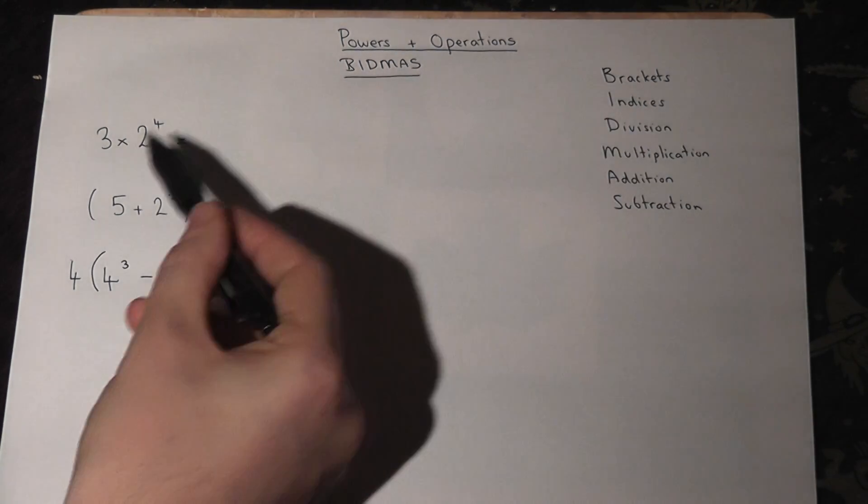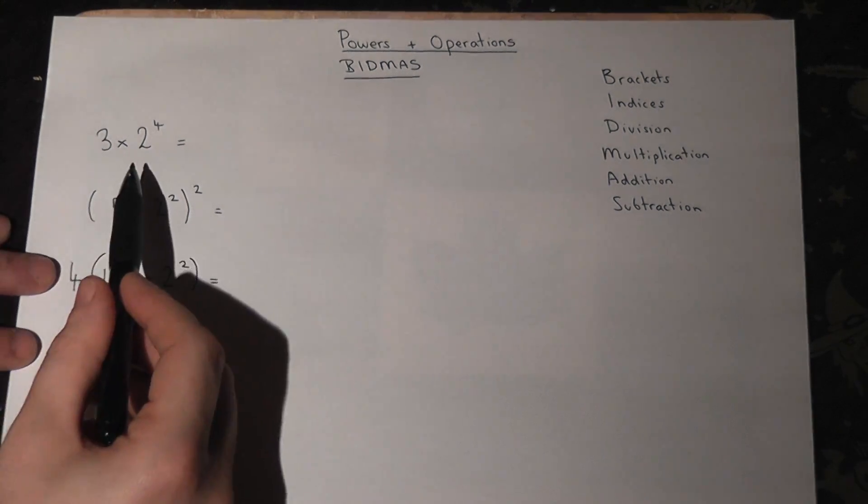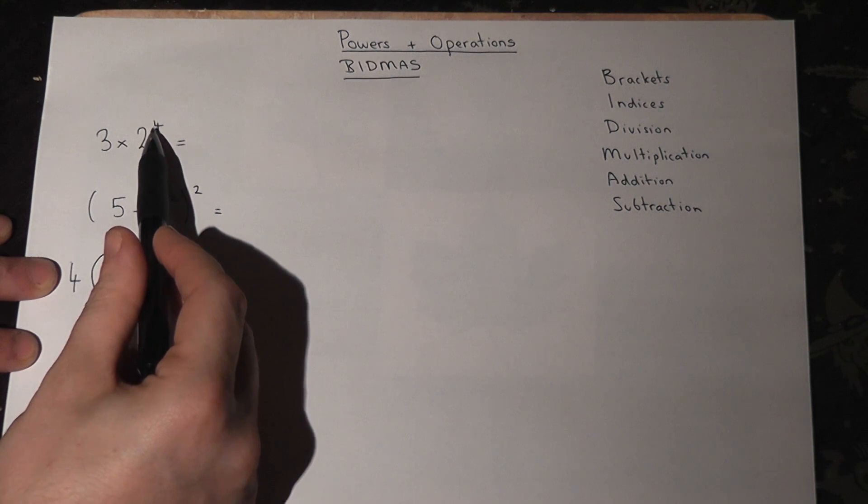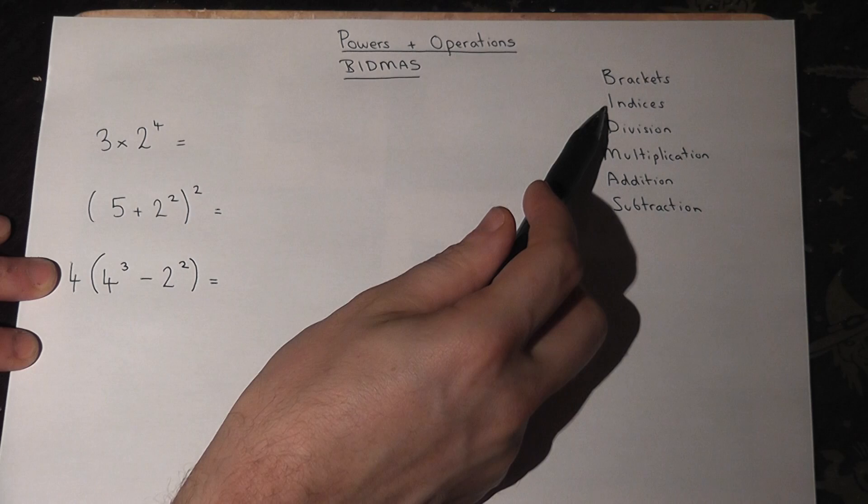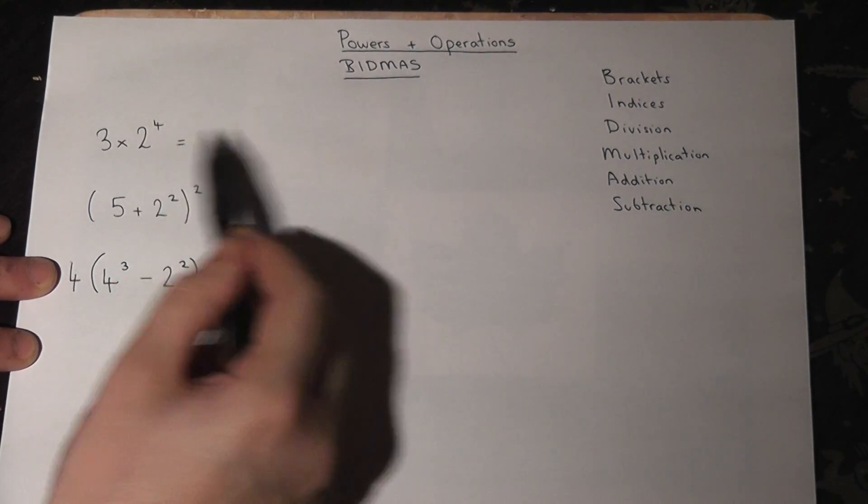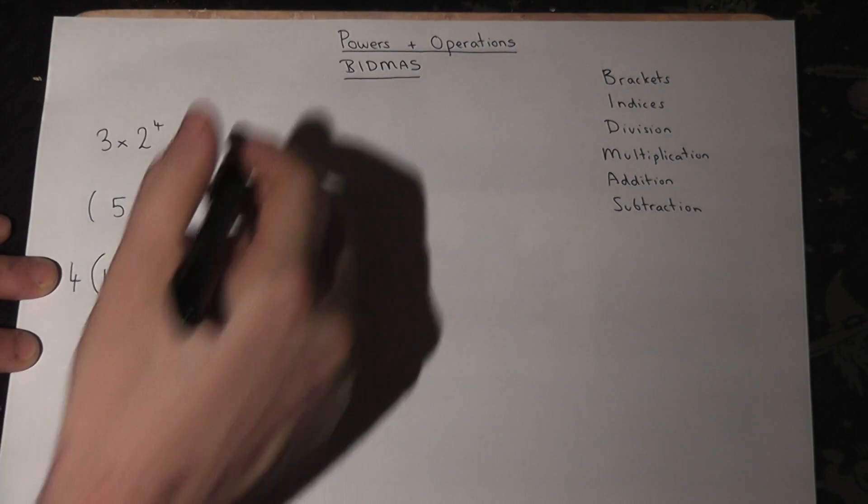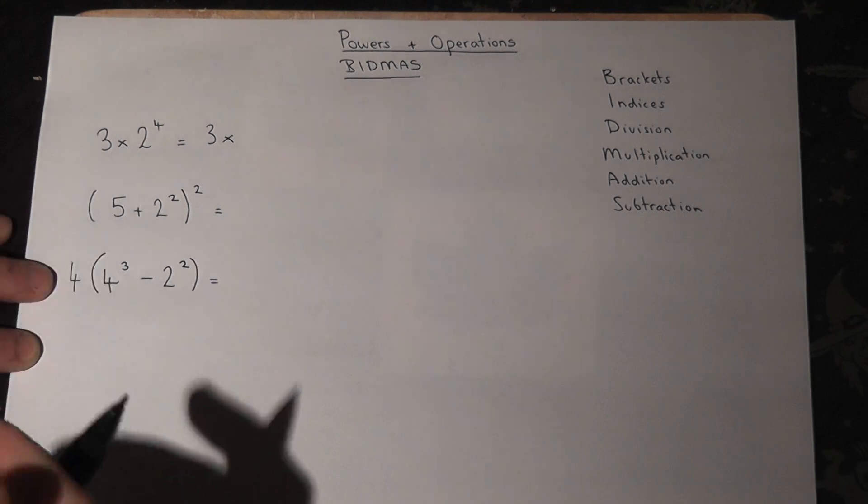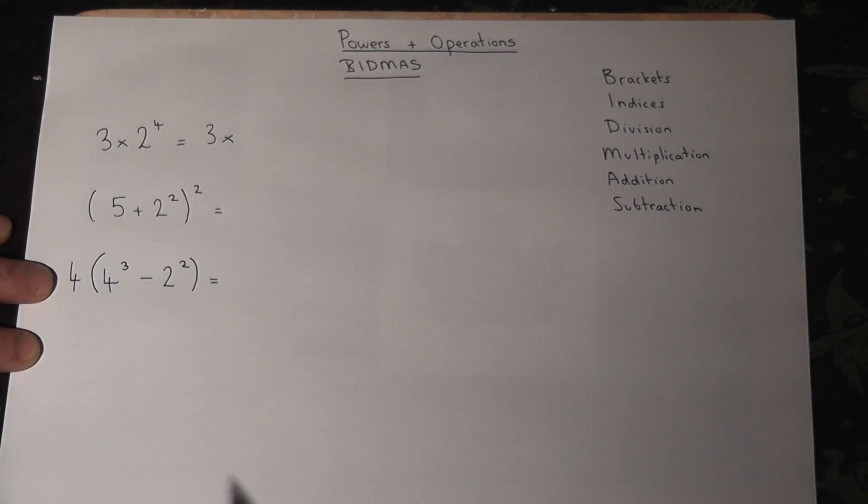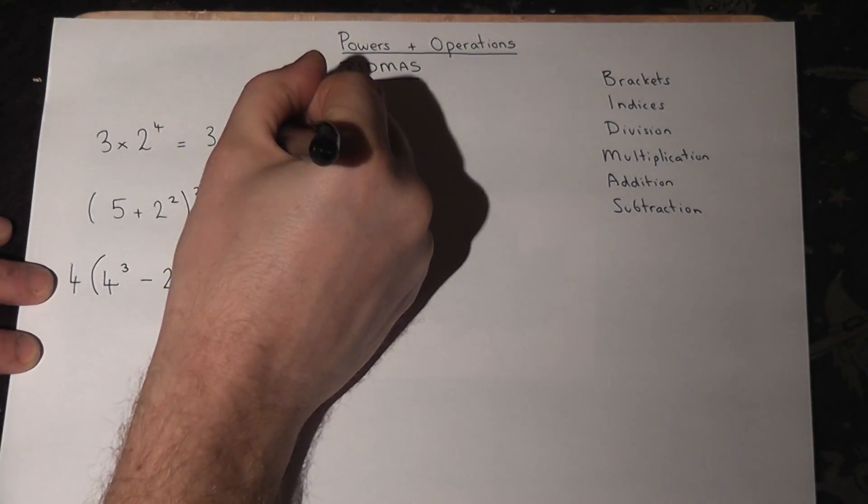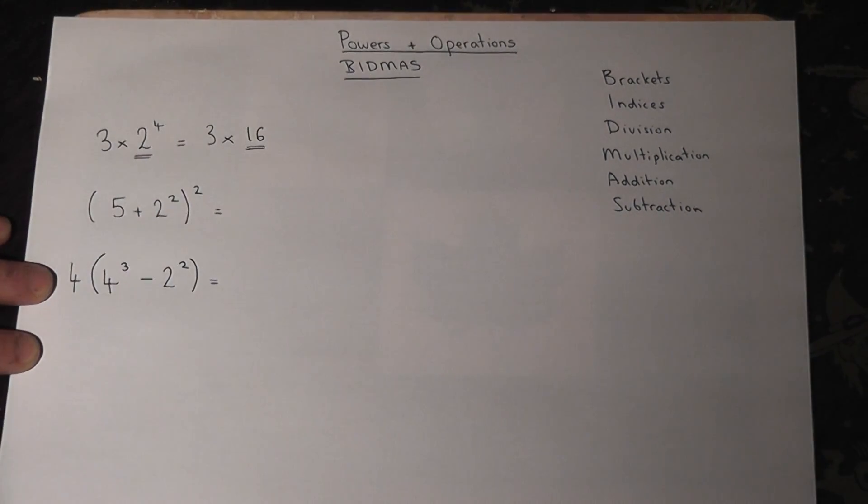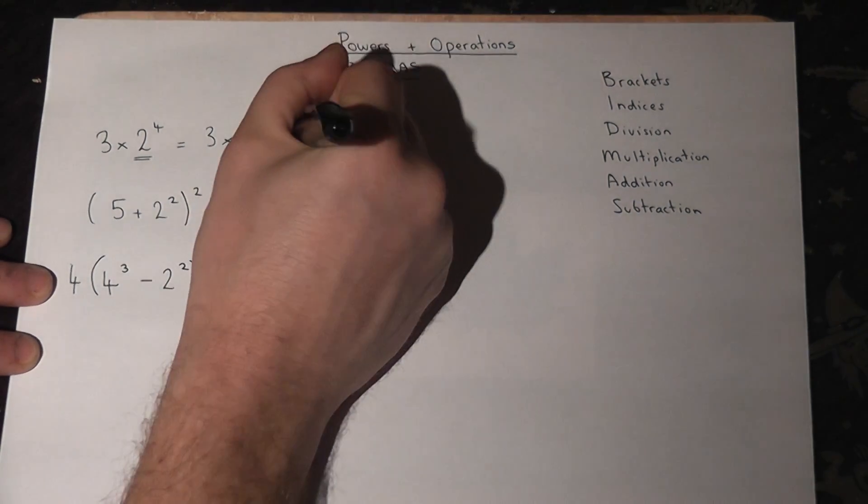We'll use this to help us answer these questions. So we look at the first one, we've got a times and a power or indice, and if you look down here indice comes first so we must work out the power part first and then do the timing afterwards. So we ignore the three for the moment and work out two to the power of four. Well two to the power of four is two times two times two times two which is two, four, eight, sixteen. So we've worked out the power part first, then we do three times sixteen. Well three times sixteen, three times ten is thirty, three times six is eighteen, add them together, forty-eight, and that's the answer to the question.